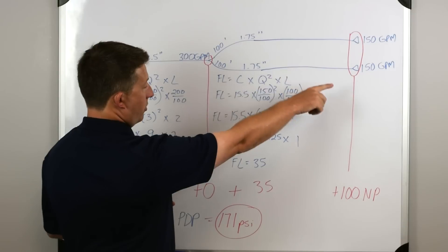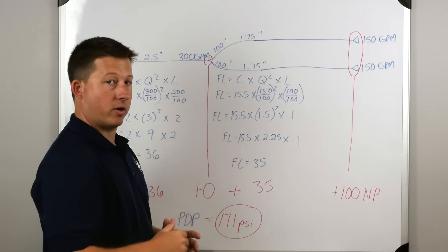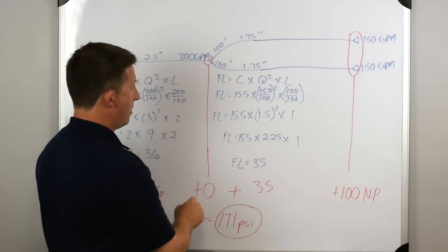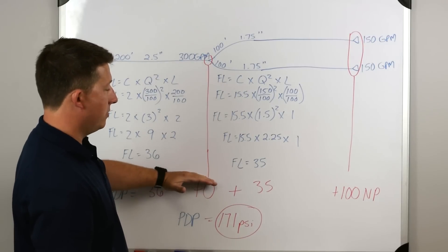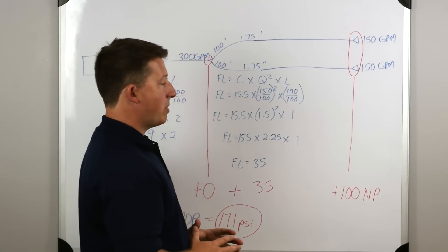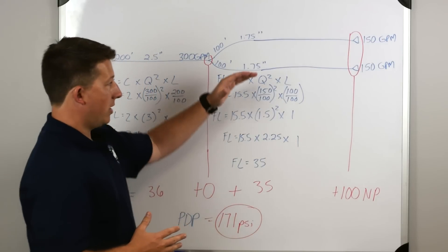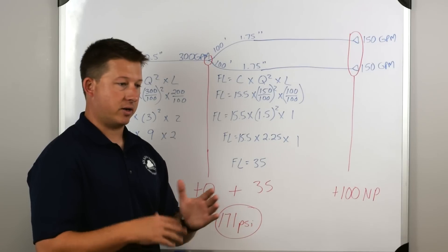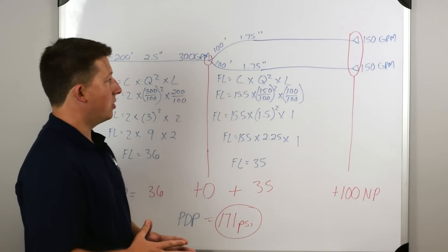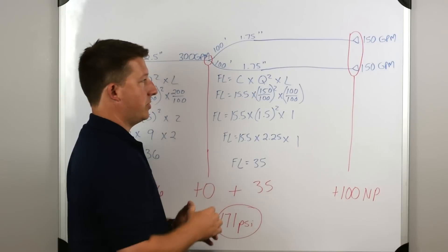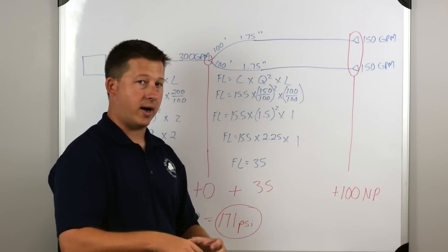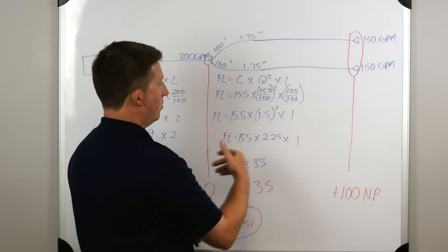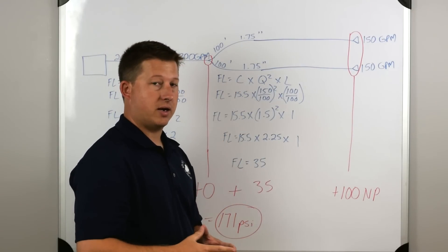In this case, 150 gallons per minute per line is only 300 gallons a minute going through that y. So we drop down and we put plus zero. We don't have to add anything for that y, but I make sure I circle that and bring it down at the bottom of the problem. Now the next step, if you remember when we said if we're flowing identical hand lines of the same length with the same flow, we only have to calculate one side. We don't need to calculate both because they're going to be pumped at the same pressure. So the only way that you'd be able to do this if you had different lengths is to be able to gate back with a pressure gauge on the y, and that's extremely rare.